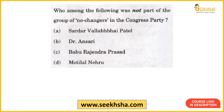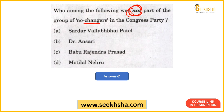Next question: Who among the following was NOT part of the group of 'No-Changers' in the Congress party? After the Non-Cooperation Movement, Congress split into two factions: the No-Changers and the Swarajists. The answer is Option D — Motilal Nehru, because Motilal Nehru was a Swarajist, not a No-Changer.